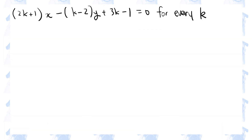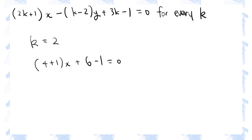In this question, we are told that this equation holds for every value of k, which means we can substitute any value into k whatsoever. First, to find the value of x, let's come up with the value of k that eliminates y from this equation. When k is two, k minus two is zero, which eliminates y. So four plus one x plus six minus one is zero, so five x is minus five, so x is minus one.